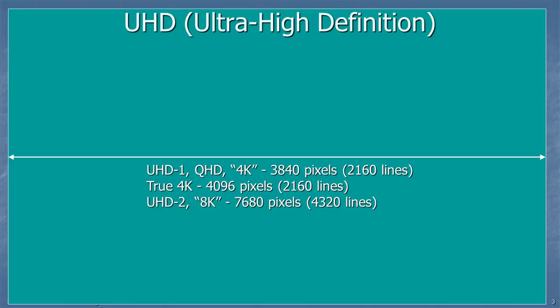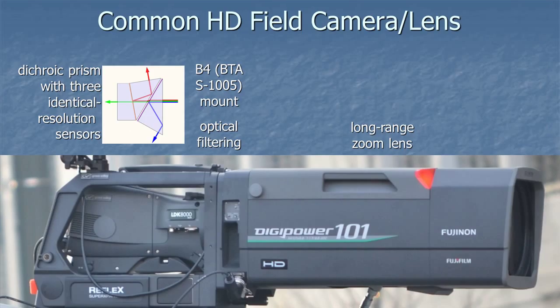I'm not going to talk very much about 8K in this. Here's a common HD field camera and lens combination. Besides what you can see, there's a prism inside that splits the light into its component parts — red, green, and blue — each with its own sensor. The lens mount is extremely well-defined, there's optical filtering, and even the depth of the three sensors, which are not the same, is very well-defined by that standard. The mount is sometimes referred to as a B4 mount.